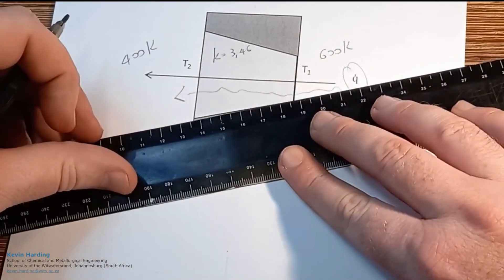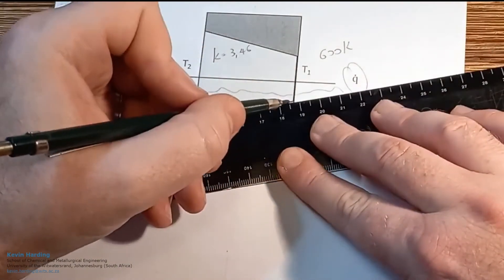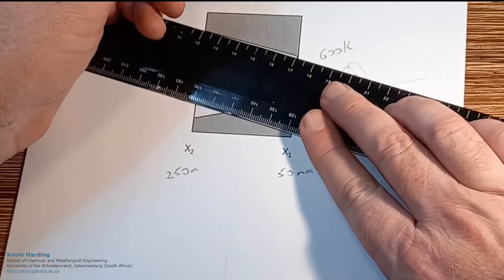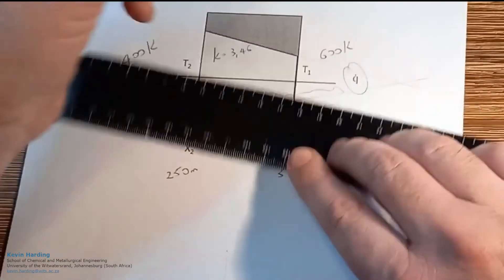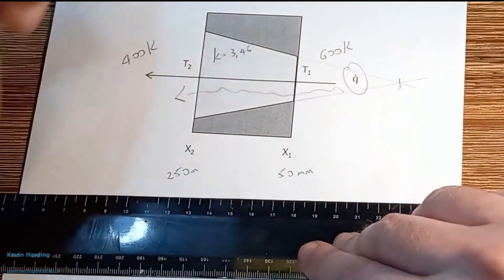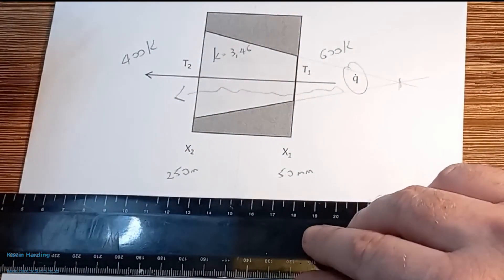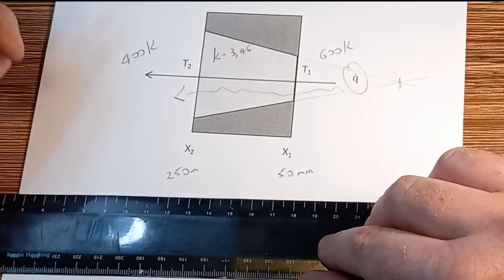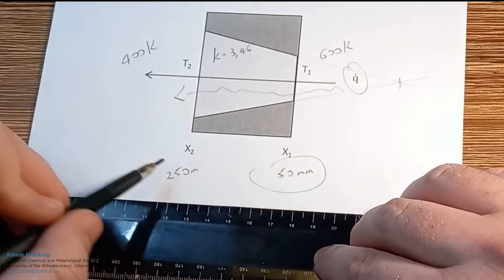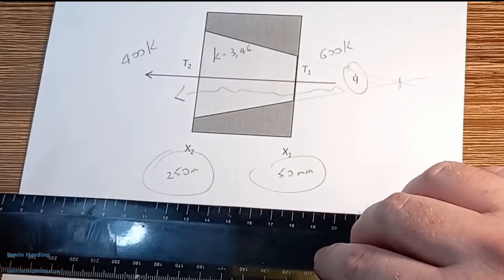What we mean with this conical section is if we had to extend it theoretically back down at the point, at x equals zero it would get to a single sharp point. We're only going to be looking from x1 to x2, from 50 to 500.